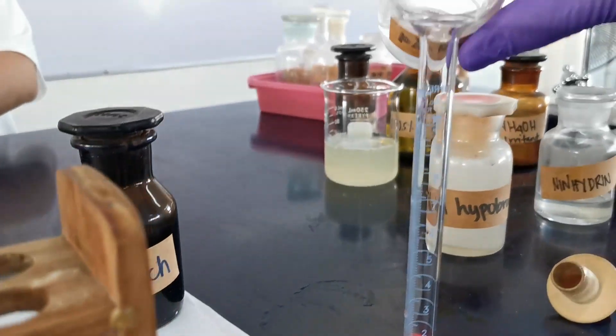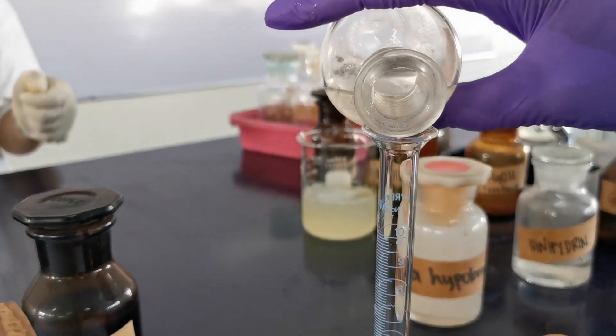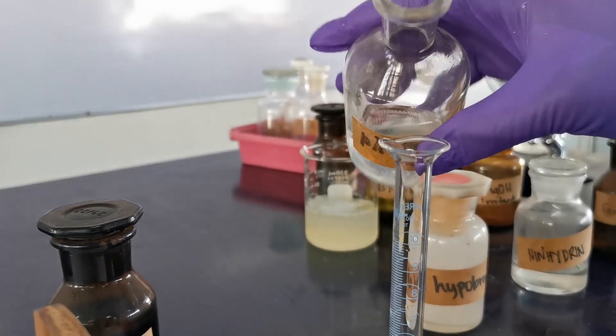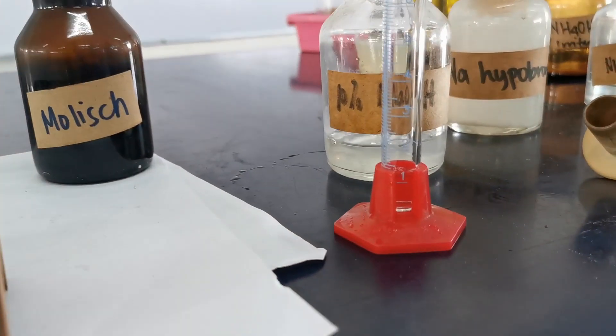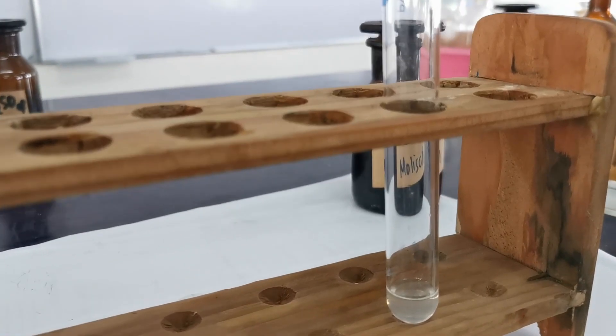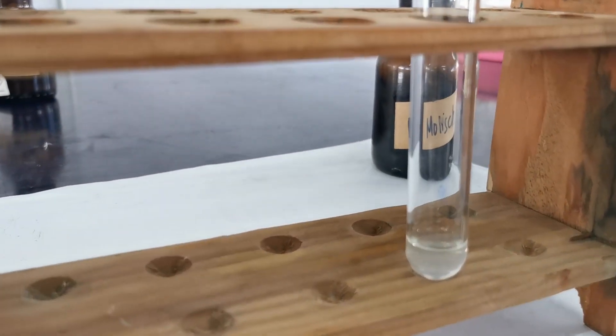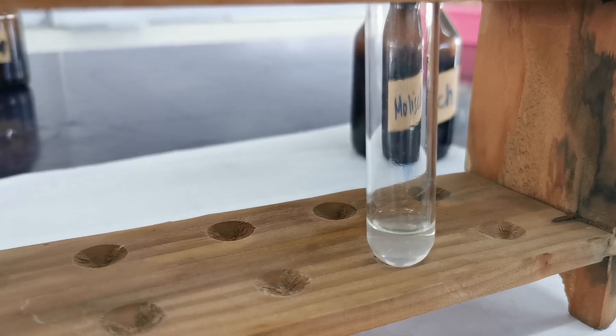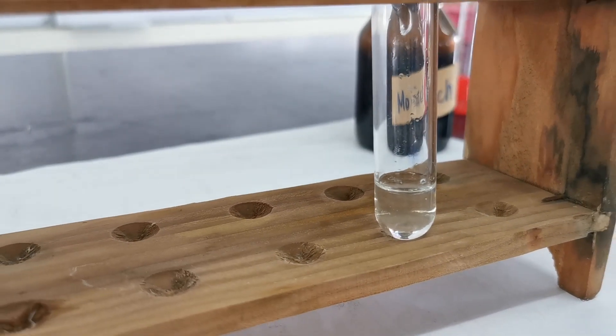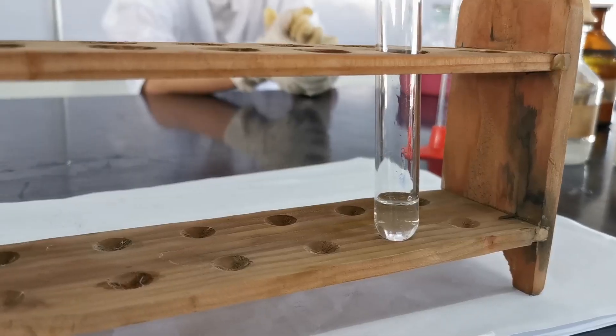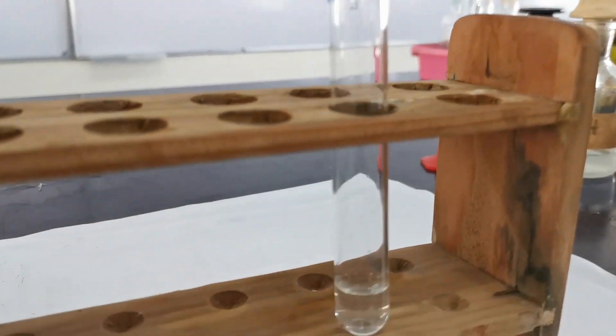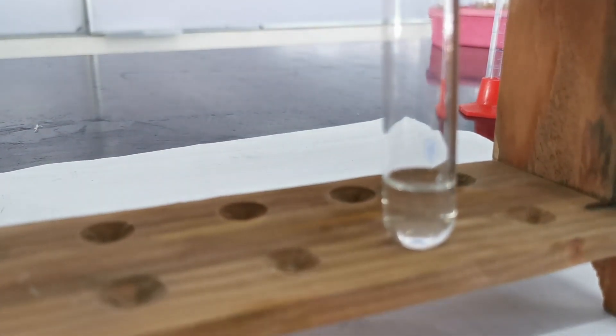Using a graduated cylinder, add 1 ml of 10% sodium hydroxide solution to 1 ml of egg albumin solution. Add 6 drops of dilute alcoholic naphthol solution or Molisch reagent.